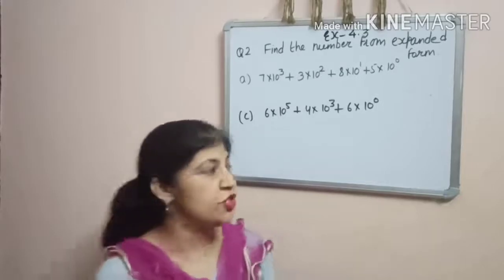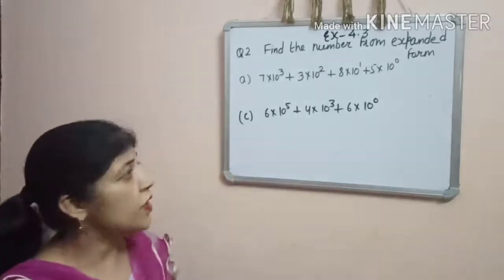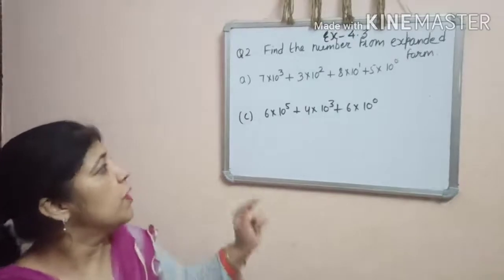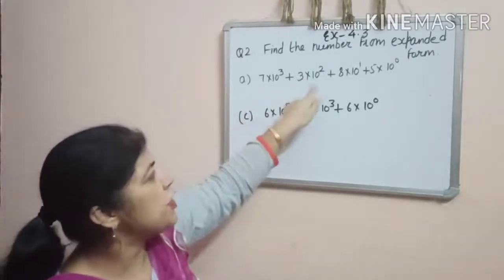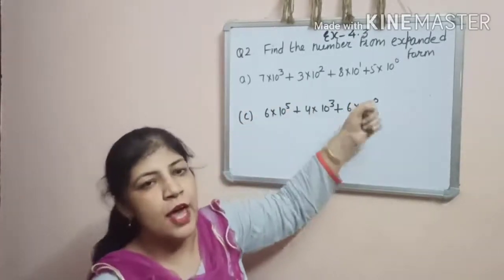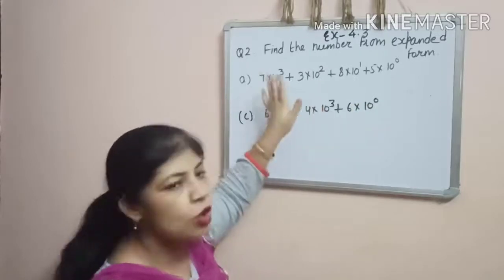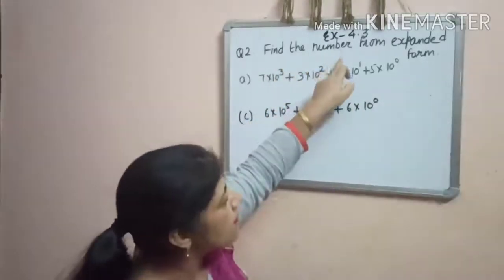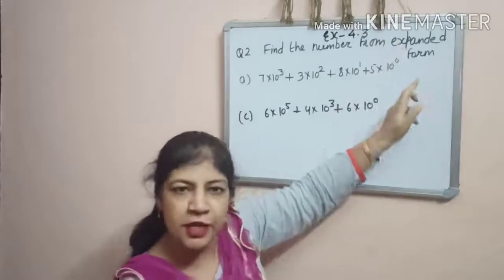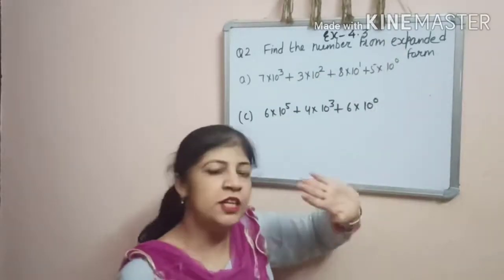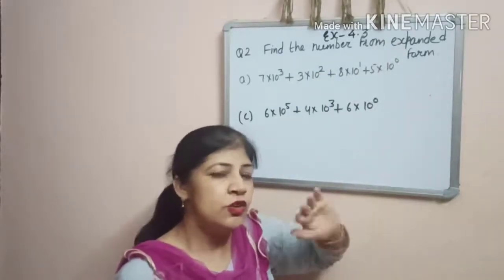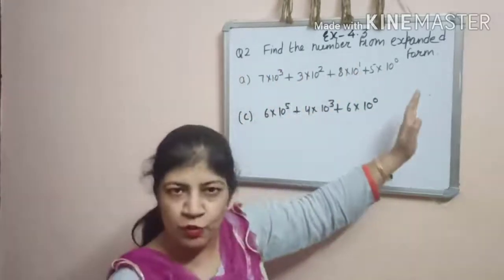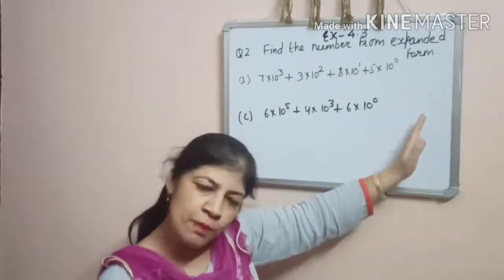In the previous question, we have done the expanded form. Now, the expanded form is given and we have to write in compact form — meaning find the number from the expanded form. Even in junior classes, you have read how to convert the expanded form to compact form.